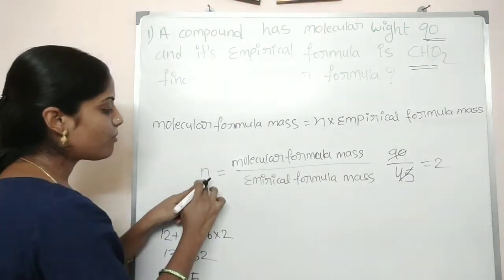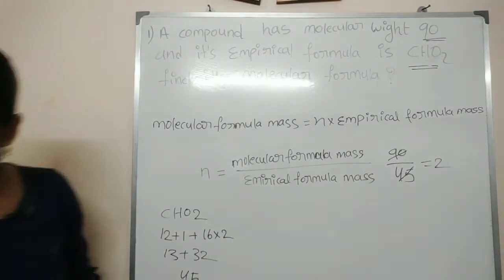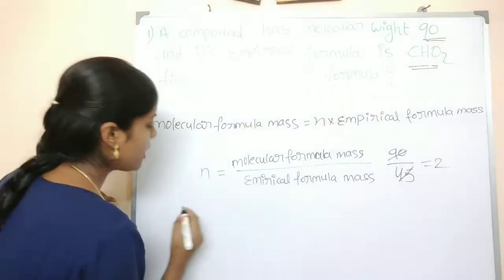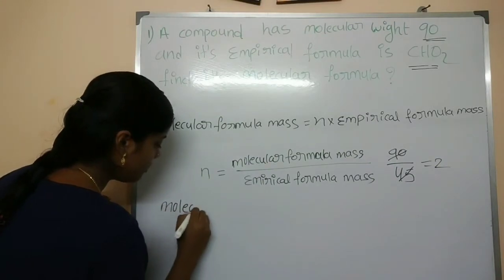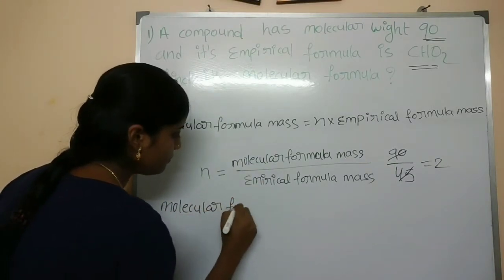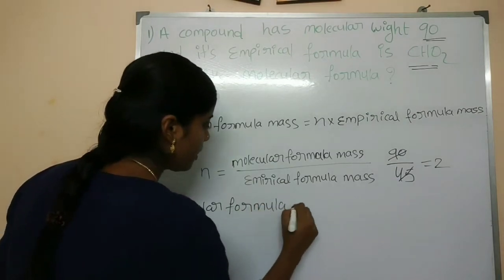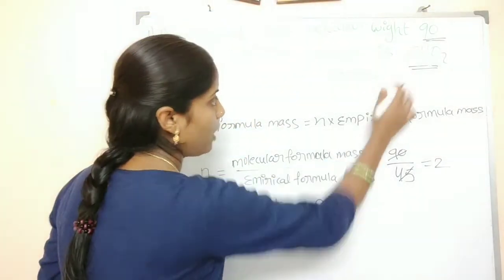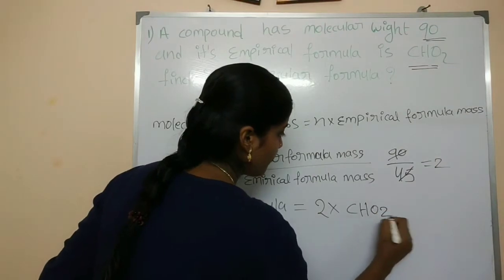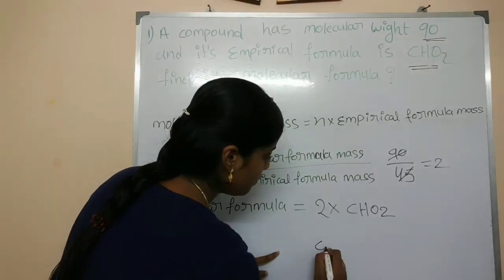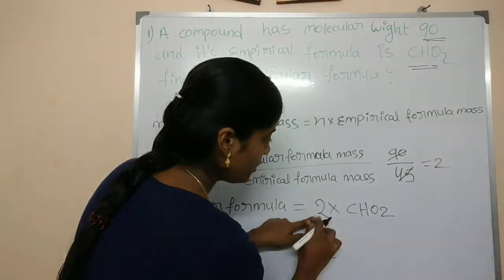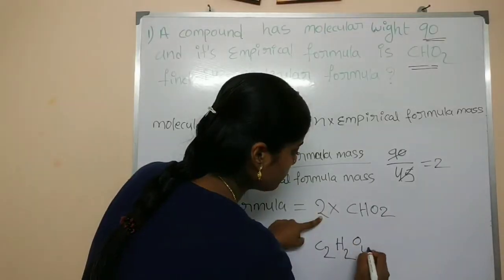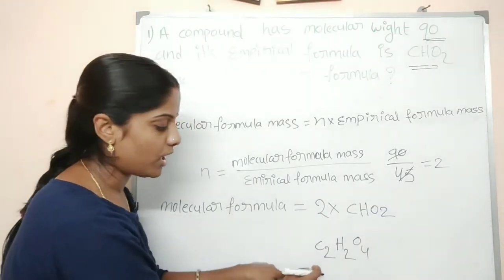So, N is equal to 2. We use this to determine the molecular formula. The molecular formula is 2 into CHO2, which gives C2H2O4. This is the molecular formula.